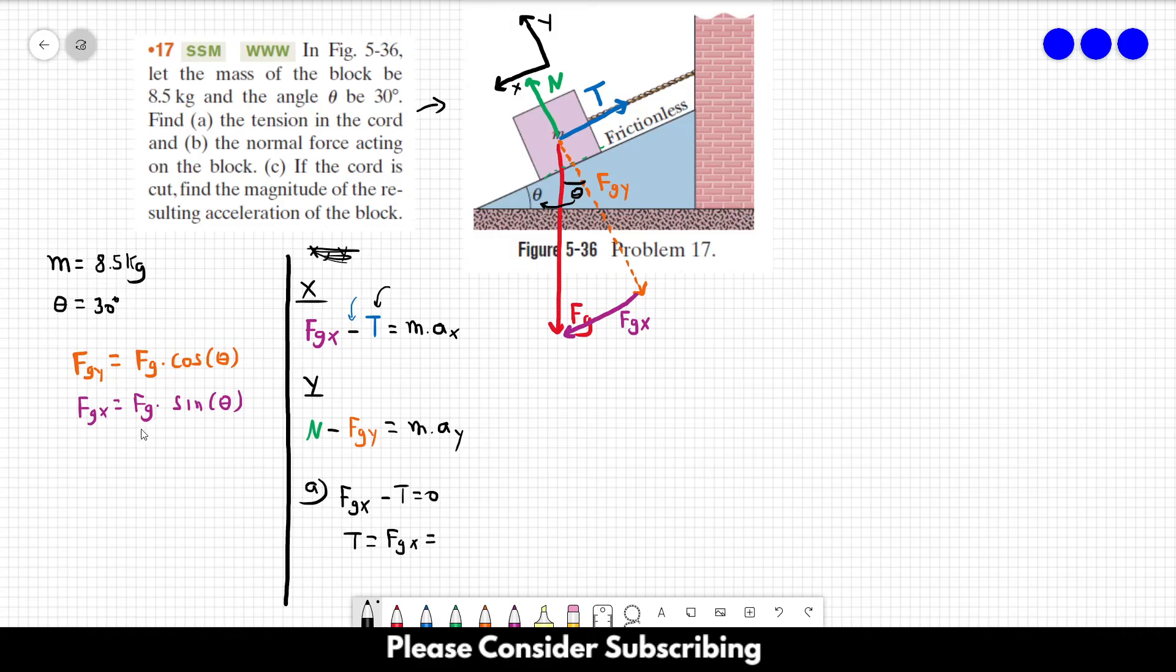FG_X is FG sin(θ), and FG is mass times gravity, so T = m × g × sin(30°). And this is equal to 8.5 × 9.8 × sin(30°), which is a half. So if you do this calculation, you would find...